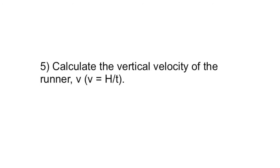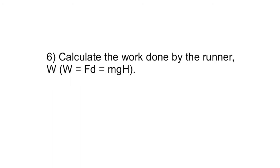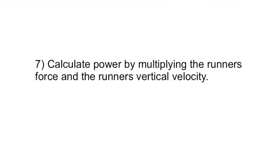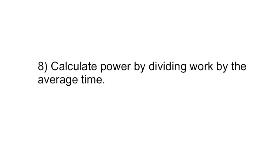Step five: Calculate the vertical velocity of the runner (V), where V equals the total height of the staircase divided by the time it took the runner to reach the top. Step six: Calculate the work done by the runner — work equals force times distance, which equals mgh. Step seven: Calculate power by multiplying the runner's force and the runner's vertical velocity. Step eight: Calculate power by dividing work by the average time.